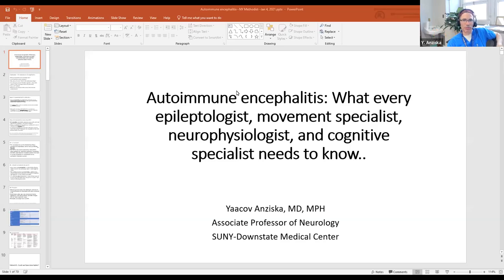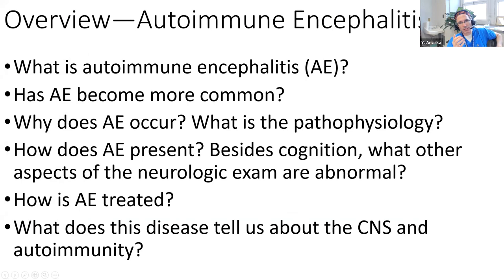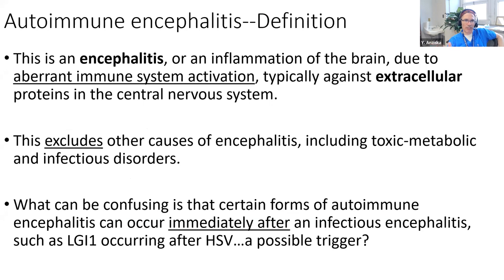We'll talk about what autoimmune encephalitis is, whether it's becoming more common, what the pathophysiology is for individual types, how it presents clinically, and how to treat it. Encephalitis is inflammation - you all understand that - and autoimmune encephalitis is clearly immune system activation, which is typically against extracellular proteins in the CNS. We're not talking about other causes of encephalitis.